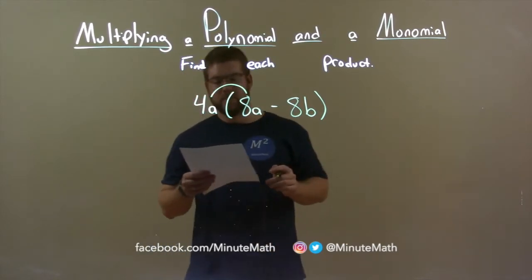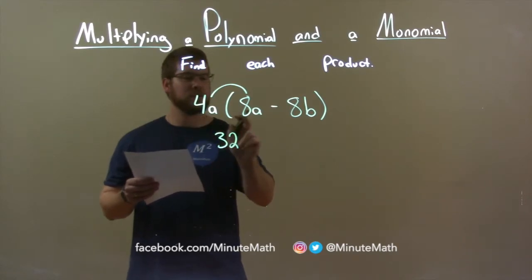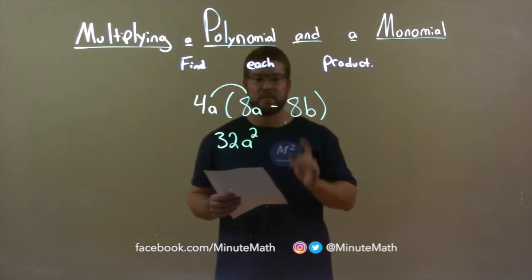So 4a times 8a is 32, we look at the coefficients, 4 times 8, 32, and a times a is a squared.